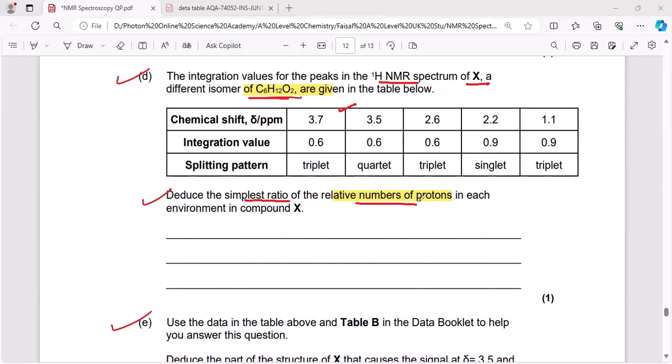So let me solve this question. Here you can see integration value is given 0.6, then again 0.6, then again 0.6, then 0.9, then 0.9. So divide all these numbers by the smallest number. When you divide each integration value by the smallest,